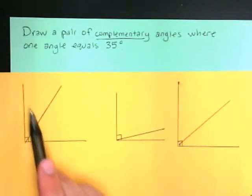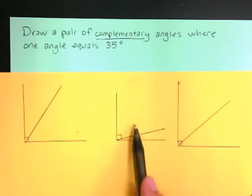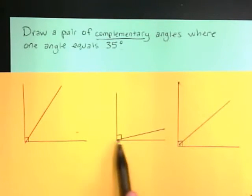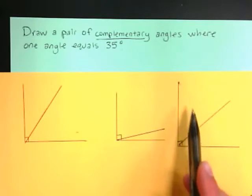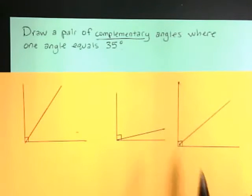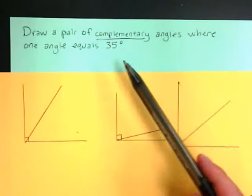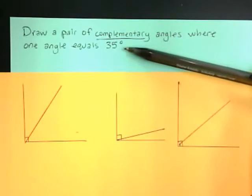So these two angles right here would add up to make a 90 degree angle. Same with these two angles, add to make 90 degrees. And these two angles add to make 90 degrees. We want to do the same thing, but we want to be specific with our angle measurements.